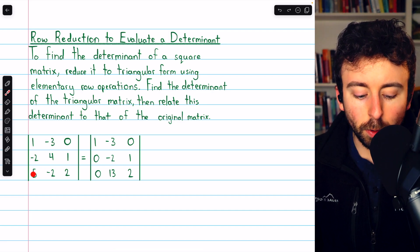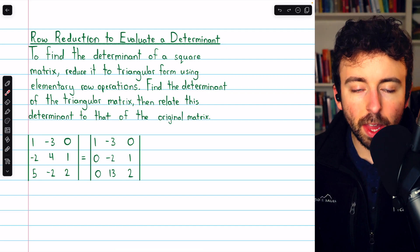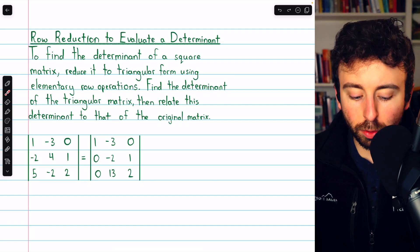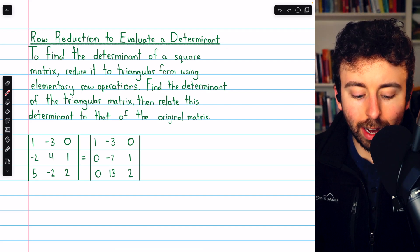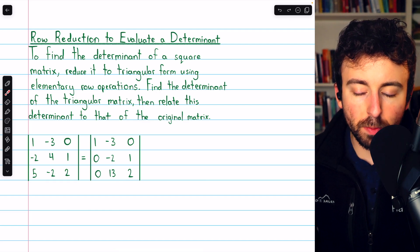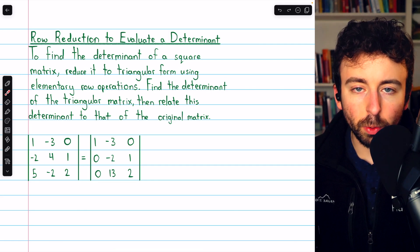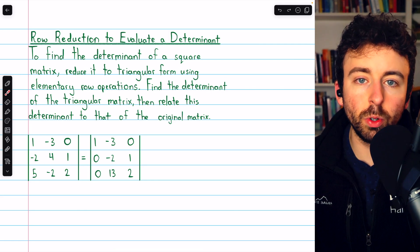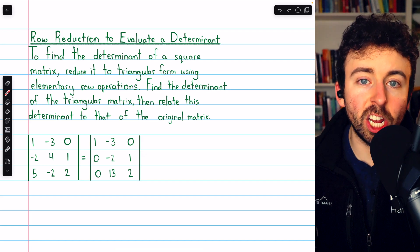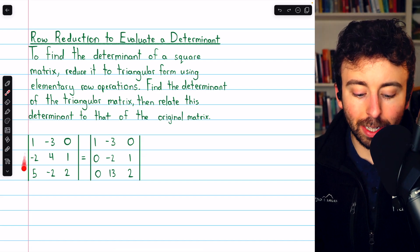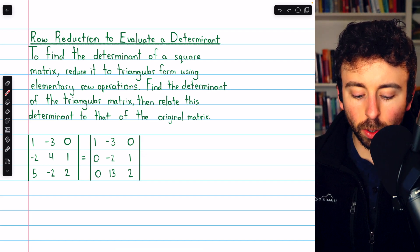We'll start by introducing zeros below this leading one. So we'll add two copies of row one to row two and subtract five copies of row one from row three. That brings us to this matrix here, and since all we did to get from here to here was add row multiples to another row, we haven't changed the determinant. So the determinant we were looking for is equal to this one.